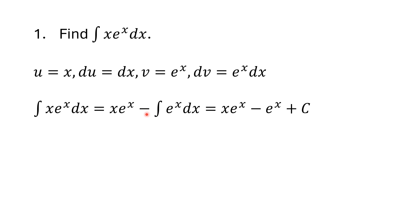And the other half, v du, comes from the formula, minus the integral of v·eˣ dx. I can integrate eˣ, so I get x·eˣ minus eˣ plus C. So that one isn't too difficult. A lot of times letting u = x and keeping eˣ as part of dv makes things easier.